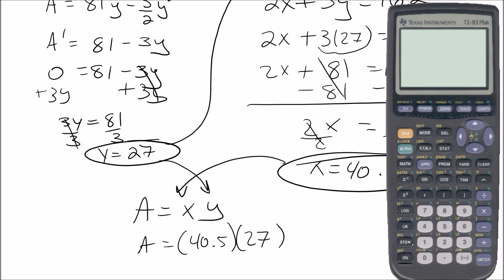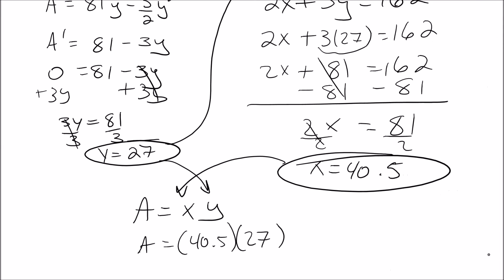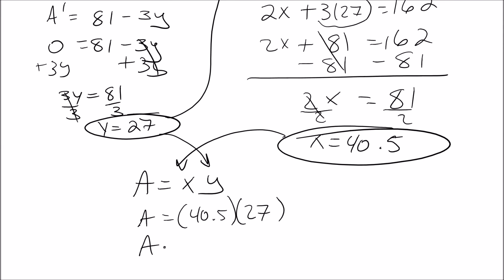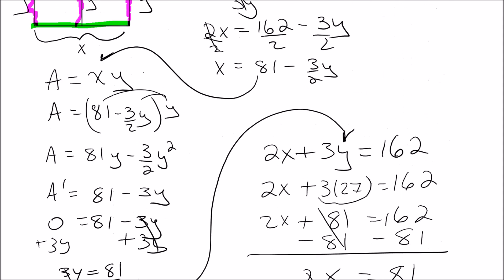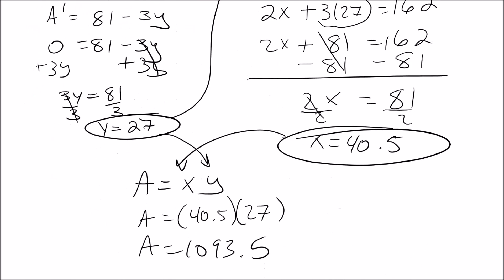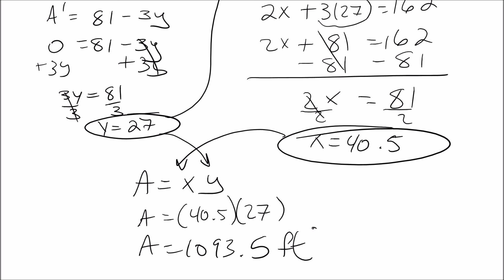And if we do that in our calculator, 40.5 times 27, that will give us 1093.5. In this case we were talking about feet, so it would be 1093.5 square feet. If you have any questions, feel free to leave them in the comments below.